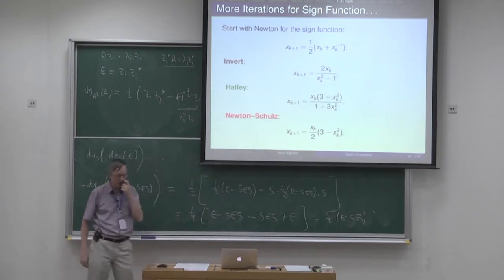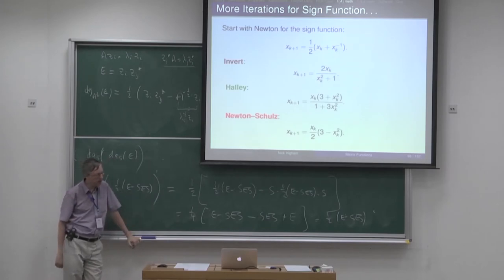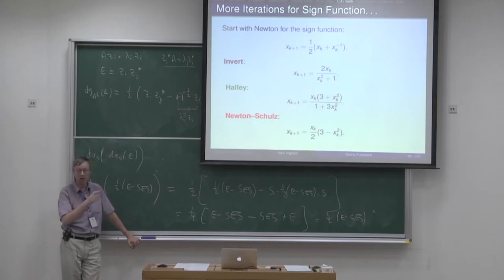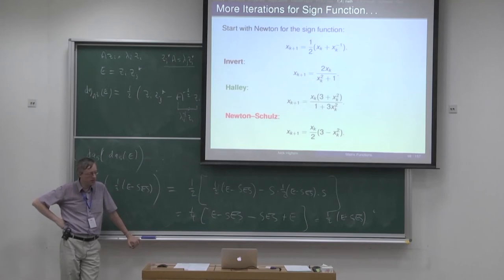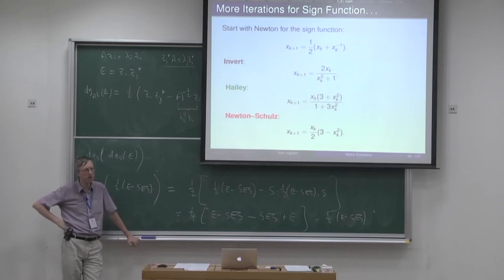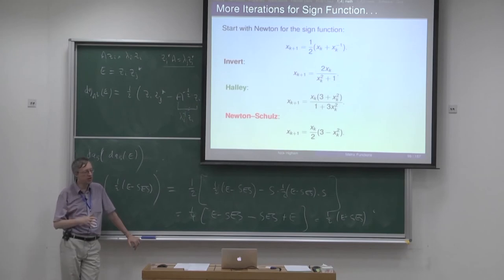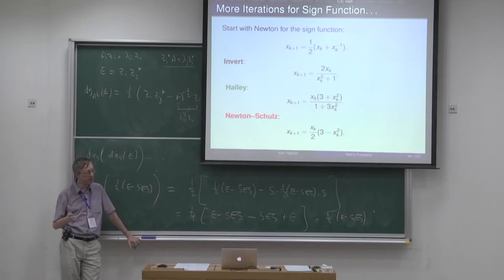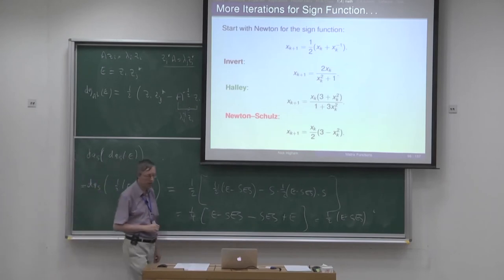One final comment on the sign function: a few years ago, through Andres Frommer at Wuppertal University, I heard about applications in theoretical physics requiring the sign function — specifically the sign function times a vector. They were using ideas going back to the Russian approximation theorist Zolotarev. Some numerical analysts working on the sign function had rediscovered a classical result by Zolotarev for scalar approximation of a sign-like function. The physics application has huge sparse matrices and uses Krylov methods, and Zolotarev approximation is quite important in that context.